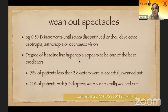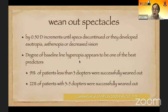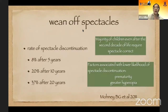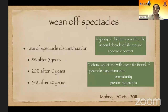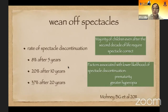The degree of baseline hyperopia appears to be one of the best predictors: 91% of patients with less than three diopters of hyperopia were successfully weaned out; however, when the grade was more than three diopters, only 22% were successfully weaned out. When weaning off spectacles, the majority of children — even after the second decade of life — require spectacle correction. Factors associated with lower likelihood of spectacle discontinuation were prematurity and greater hyperopia. The rate of spectacle discontinuation was around 8% after five years, 20% after ten years, and 37% after twenty years.